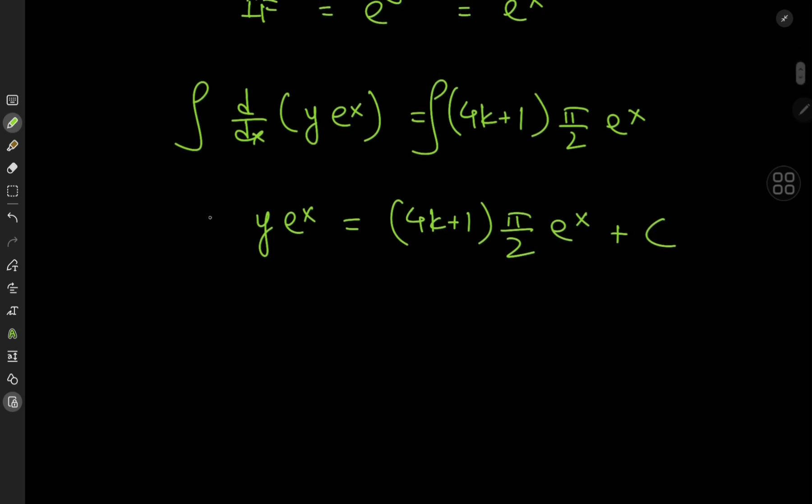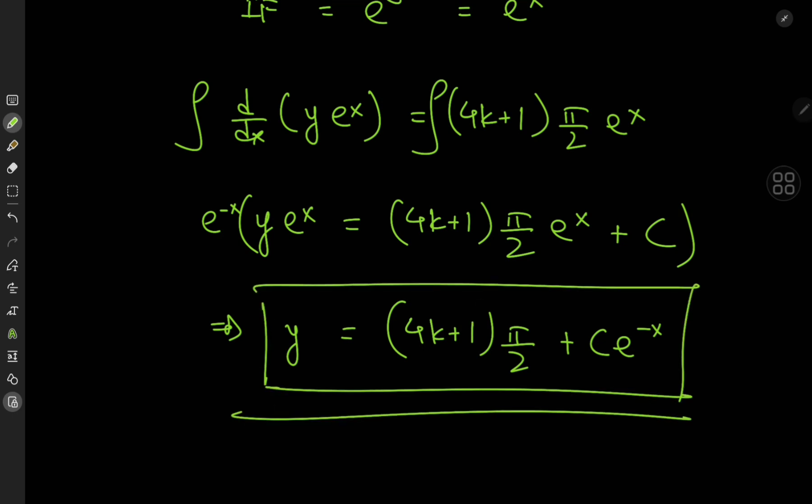And now expanding using e to the negative x, we have y equal to 4k plus 1 times pi by 2 times e to the negative x. So our first differential equation here has infinitely many solutions.